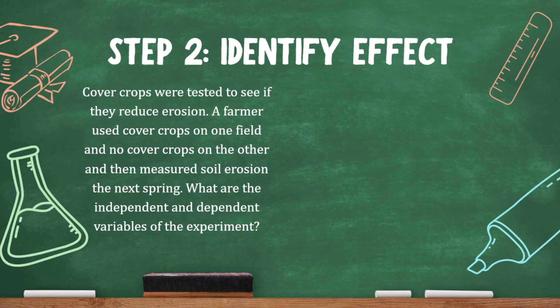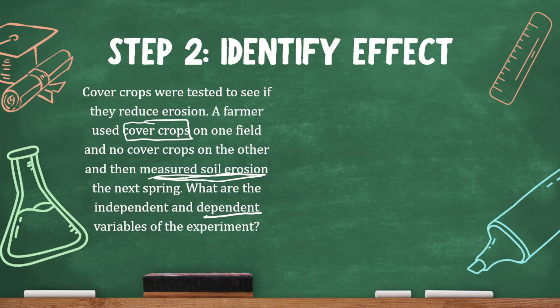Our second step is to identify the effect, which will be the dependent variable. We know the change is cover crops. He thinks they might reduce erosion, and he also measured soil erosion. So the effect of that change will be the amount of erosion — and he thinks there will be less erosion.